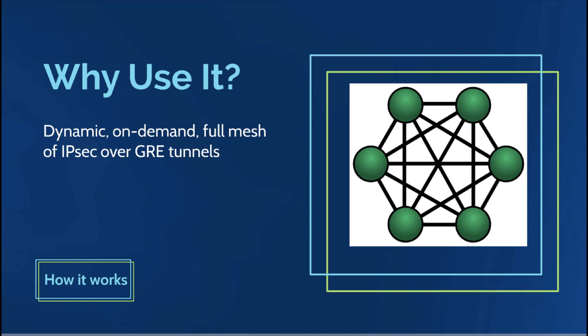What the dynamic multipoint VPN allows is really compelling — it is the dynamic creation of tunnels between the entities in our hub-and-spoke design. This can be done on demand so that when spoke A wants to talk to spoke B directly, it not only doesn't need to use the hub, but dynamically the appropriate secured tunnel can be created. We end up with a full mesh, if needed, of IPsec over GRE tunnels, with reduced burden on the hub.